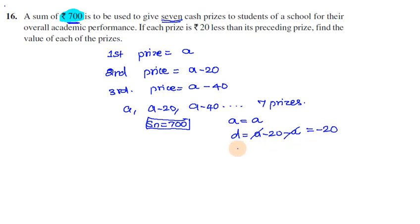So n is 7 prizes. The Sn formula is: Sn = n/2 × [2a + (n-1)d]. So this is the sum formula.